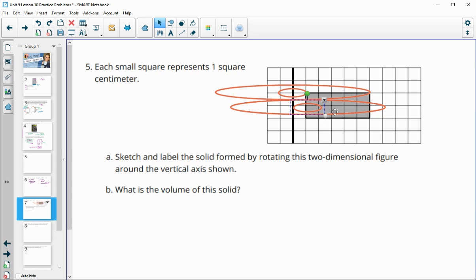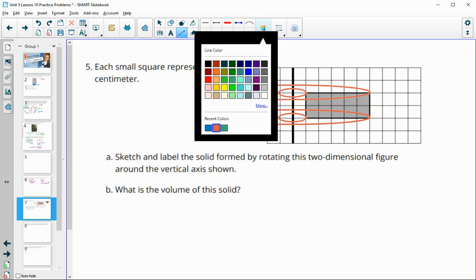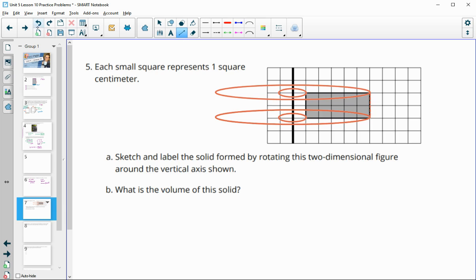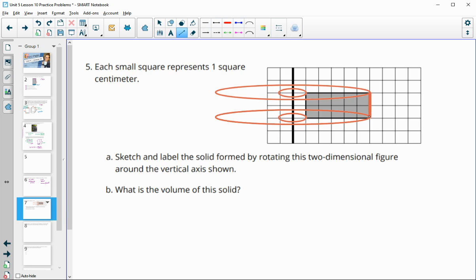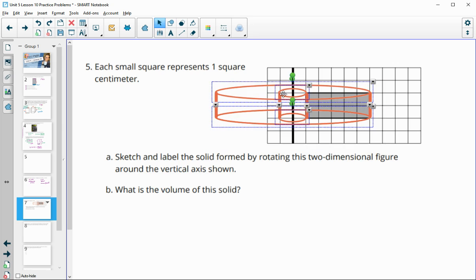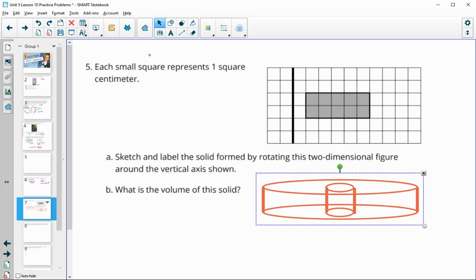And then the height kind of between these would be 2, which is the height of this two-dimensional thing here. It would also connect these inner circles as well. This would be a sketch of the three-dimensional solid. This inner part is hollow and then the rest of it would be filled in.